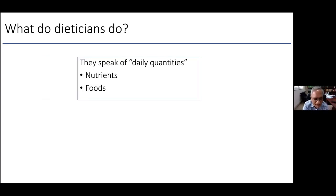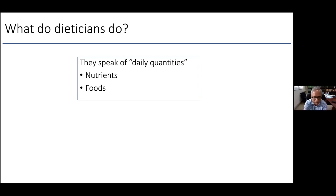What will a dietitian do if you ask what you should eat? Dietitians boil it down not to function but to nutrients — they'll tell you that you need X, Y, Z amounts of nutrients, making an alphabet soup of them. Or they'll translate that into actual foods. And of course, if you go on Google, you'll get any number of suggestions about what foods to eat, when, and how. The whole business of what's in a diet is a mess.